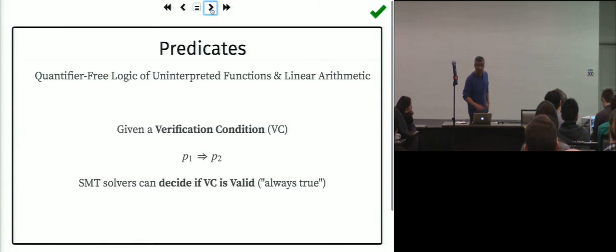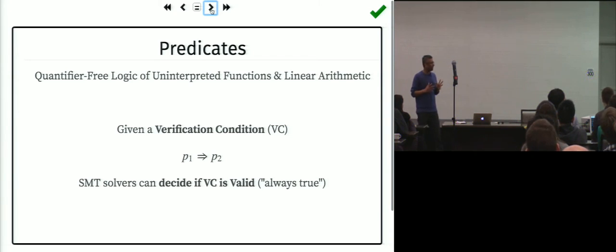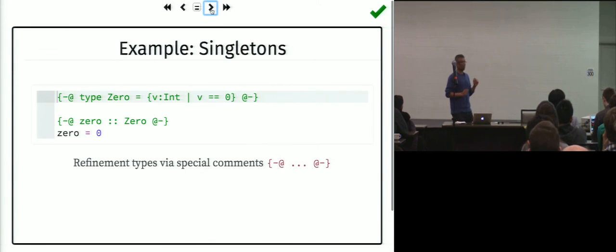The nice thing about this restriction is that SMT solvers are very good at reasoning about formulas over this particular logic. These verification conditions are logical formulas of the form P1 implies P2. What SMT solvers can do is decide if P1 implies P2 is valid, meaning always true no matter what assignment you give to the variables.